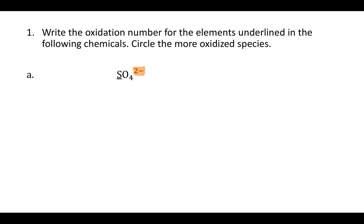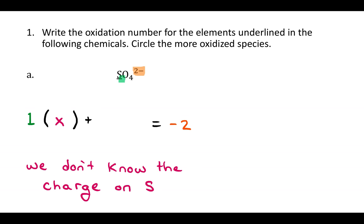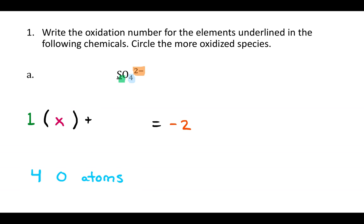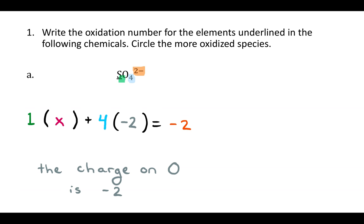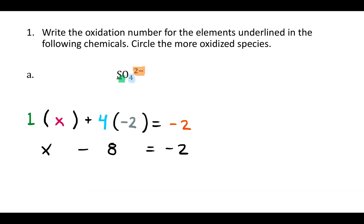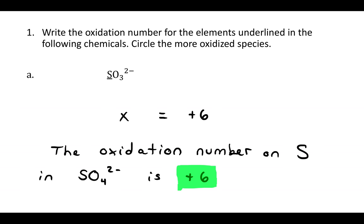Let's do the same thing for sulfate. All the charges on all the atoms have to add up to the charge of the whole ion, which is negative 2. I have one sulfur — I don't know its charge, so I write X — and four oxygen atoms, each with a negative 2 charge from the periodic table. That gives me X + 4(−2) = −2, so X − 8 = −2. Add 8 to both sides: X = +6. The oxidation number on sulfur in sulfate, SO₄²⁻, is +6.